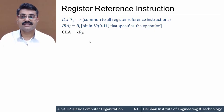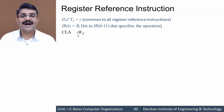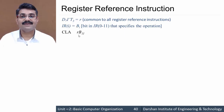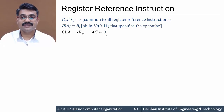Starting with the first instruction: CLA. We designate d7 i-dash t3 as 'r', common to all register reference instructions. So r·b11 means r is d7 i-dash t3 and b11 is the bit number set to 1 with all rest bits 0. CLA instruction is executed at time r·b11. At r·b11, the content of the accumulator is set to 0 — clear AC.